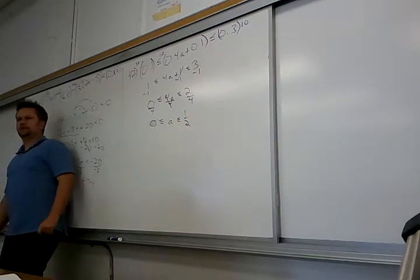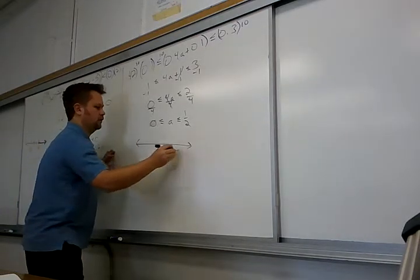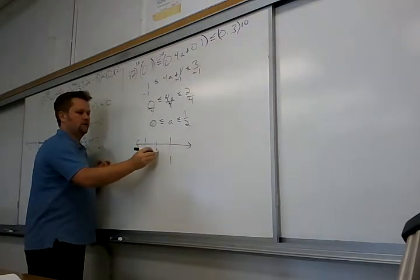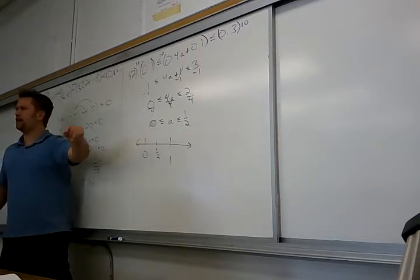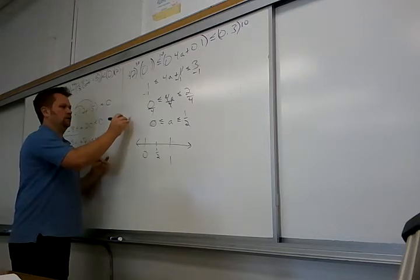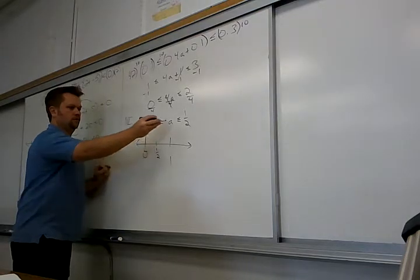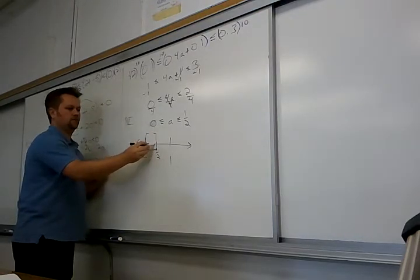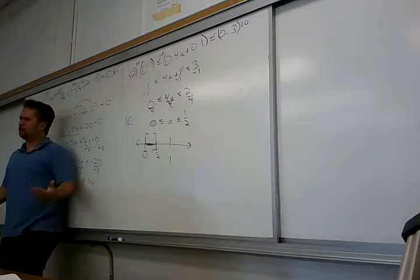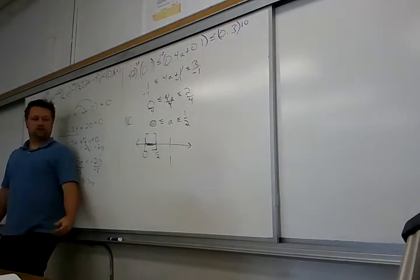Graph that on a number line. Mark 0 and 1/2, with 1/2 right in the middle between 0 and 1. Both endpoints use brackets because we have less-than-or-equal-to, meaning the endpoints are included. Shade the region from 0 up to one-half. For interval notation, it should be bracket 0 comma one-half bracket.